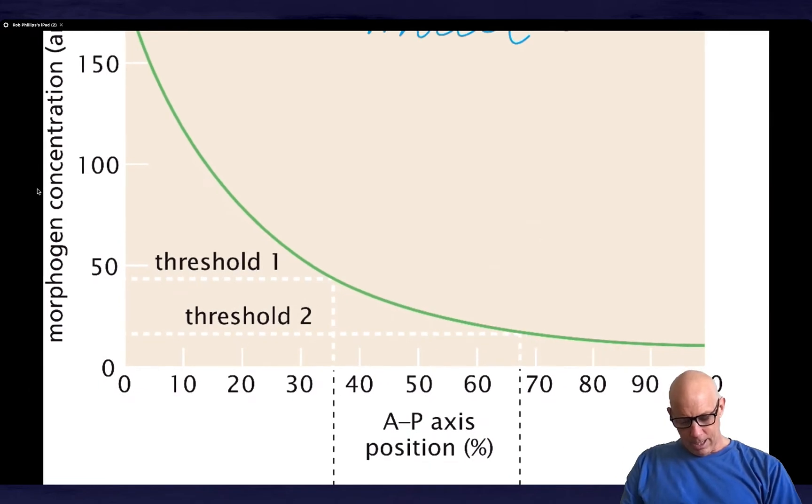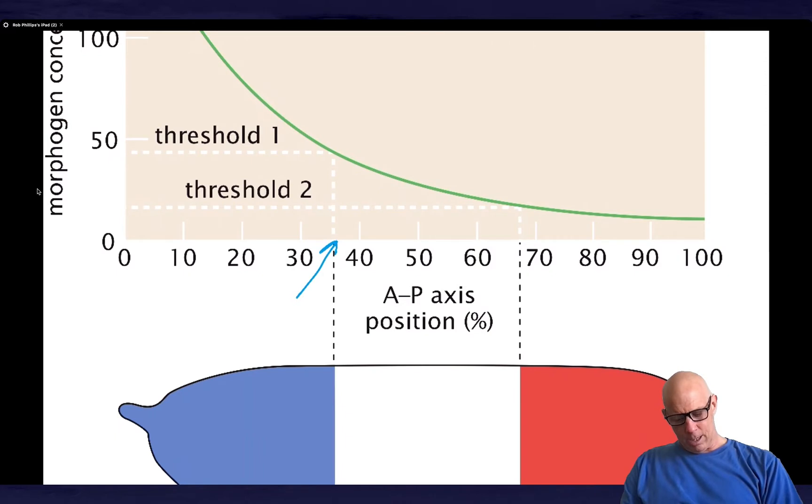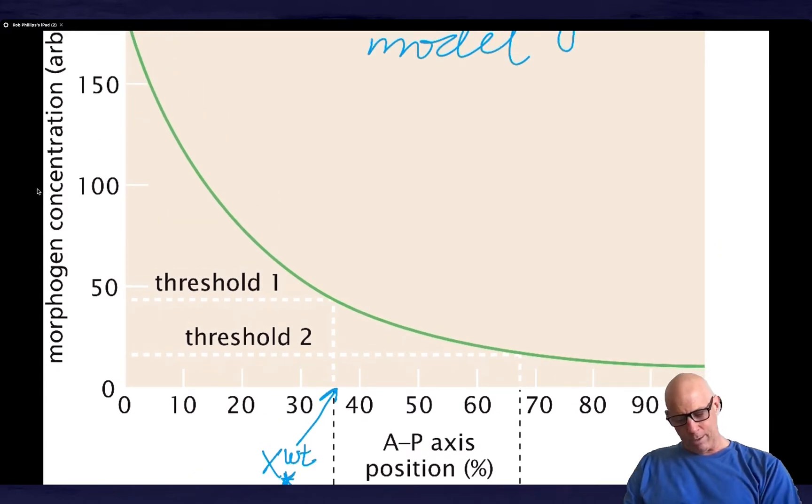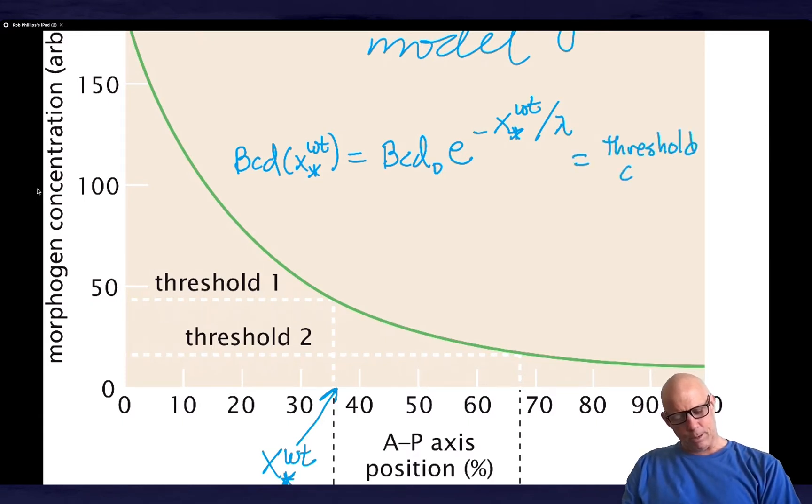The thing that I want to say is that we can call this position... I don't want to use that notation. I'm going to call this particular point x star wildtype. And what I mean by x star wildtype is that that is where the threshold is that crosses between the blue and the white fates. And we can solve for that. So bicoid at x star wildtype is equal to bicoid of zero e to the minus x star wildtype divided by lambda. And this is equal to the threshold concentration.